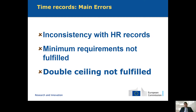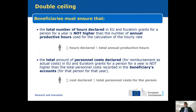There are two double ceilings. One is on the hours: the total number of hours declared in EU and Euratom grants for a person for a year should not be higher than the number of annual productive time hours used for the calculation of the hourly rate. Then there is the same check, but on the cost, not on the hours. In the CFS procedure this is not directly mentioned, but the articles referenced in the grant agreement cover this double ceiling. Be sure you verify this because it may have serious impact for your CFS audit.